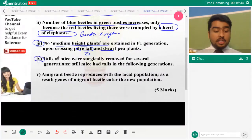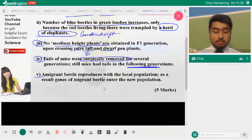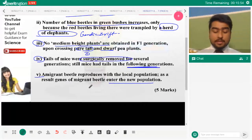Ayesha, now fourth - tail of mice was surgically removed for several generations. Still mice had tails in the following generations. Can someone answer this fourth question? Sia, there was no reason for that. The elephants happened to put its foot upon that. There was no reason. That is why we call it genetic drift, because it happened by accident, simple as that. Yes, so the surgical removal was a change in the acquired characteristics. It wasn't an inherited characteristics. That is what. Fifth - a migrant beetle reproduces with local population. As a result, the gene of migrant - so this is the gene of the population. So this is gene flow.